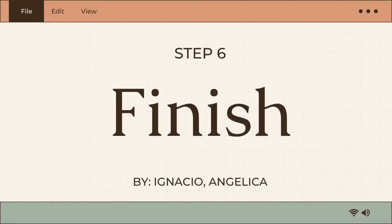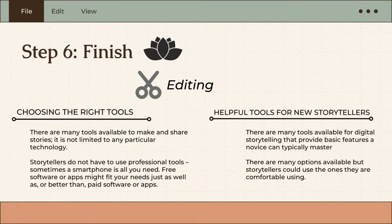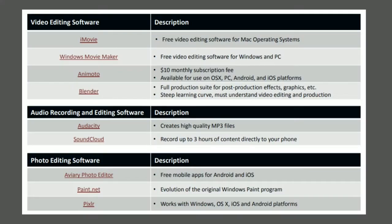Step 6: Finish. The editing phase is where the planning and recording come together. This is where you combine visual and audio parts to create a final product. Choosing the right tools — there are many tools available to make and share stories, and it's not limited to any particular technology. Storytellers do not have to use professional tools; sometimes a smartphone is all you need. Free software or apps might fit your needs just as well as or better than paid software. In editing, there are also helpful tools for new storytellers. There are many options available, but storytellers should use the ones they are comfortable with. Here are some video editing, audio recording, and photo editing software options.